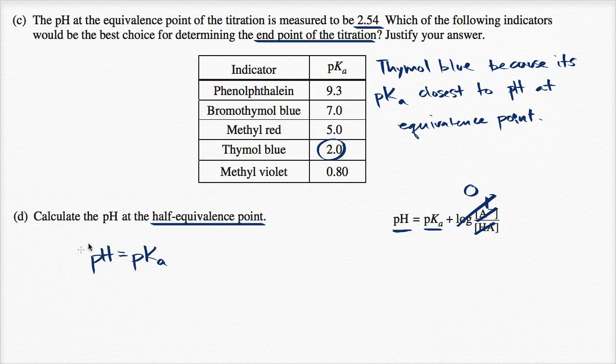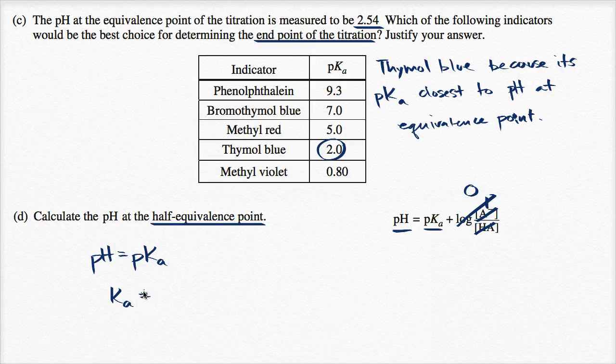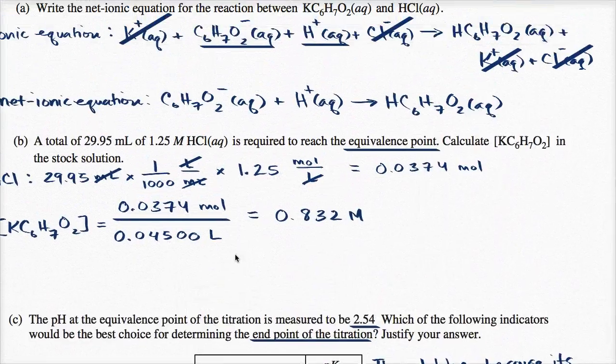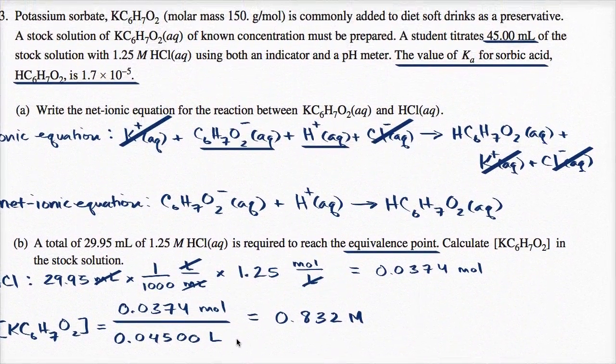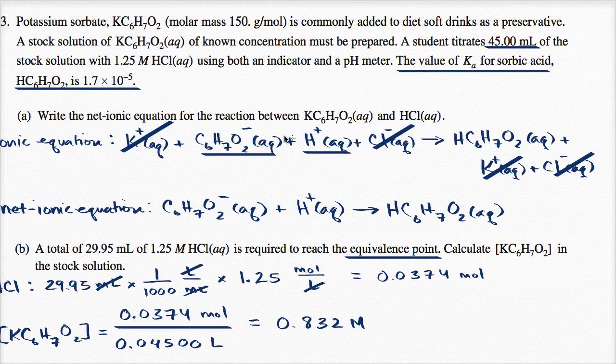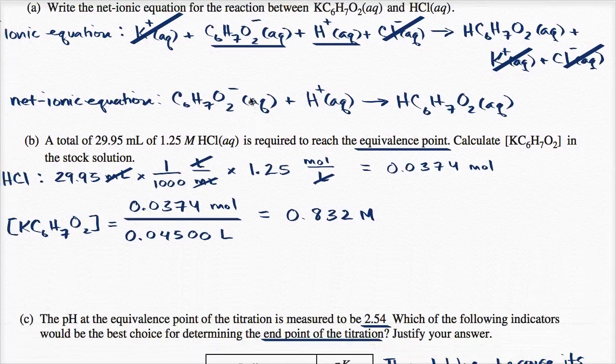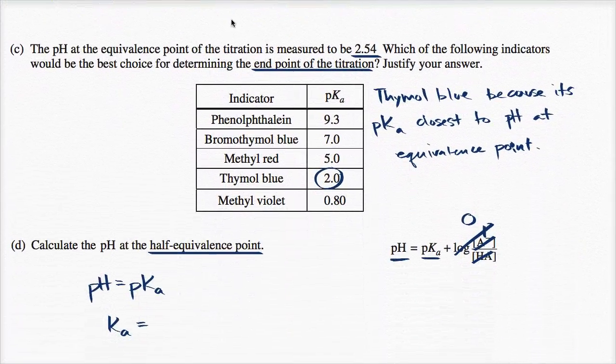And so what is the pKa here? Well, they told us that the Ka, and this is the Ka of sorbic acid, is equal to 1.7 times 10 to the negative fifth.